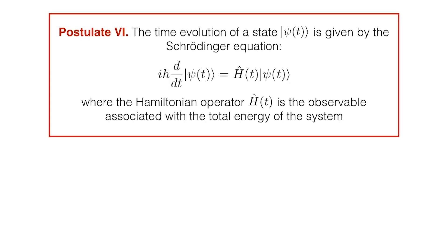So without further ado, let's get started with the Schrödinger equation. Postulate 6 of quantum mechanics tells us what happens to a quantum state as a function of time. We describe quantum states with kets, and now we introduce their time dependence with this time variable t. The time evolution of such a ket is then governed by the Schrödinger equation written here. This equation is a postulate — it is not something that we can derive. Instead, what we find is that all the predictions coming out of this equation are confirmed by experiment.